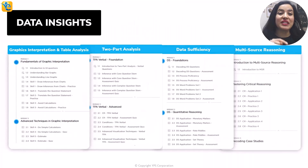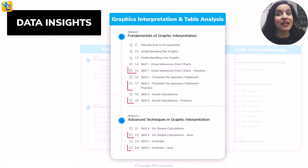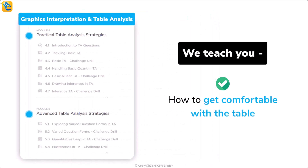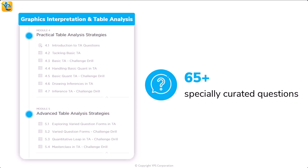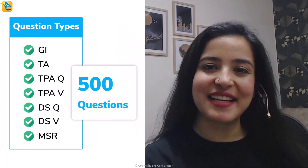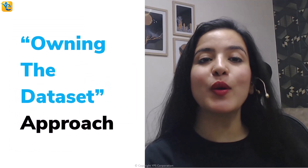Statement one does explain his ordering — specifically why room two came after one and six despite being available the soonest. So we mark yes for statement one. This illustrates the power of thoroughly owning the data set. In the eGMAT DI course, the table analysis modules teach you how to process the table efficiently, with over 65 specially curated questions and around 500 total questions covering process skills of inference, translation, and visualization.